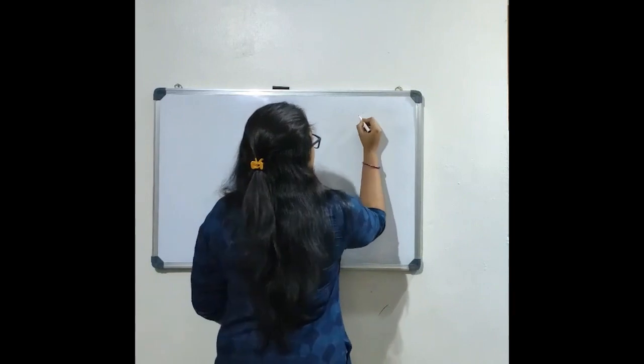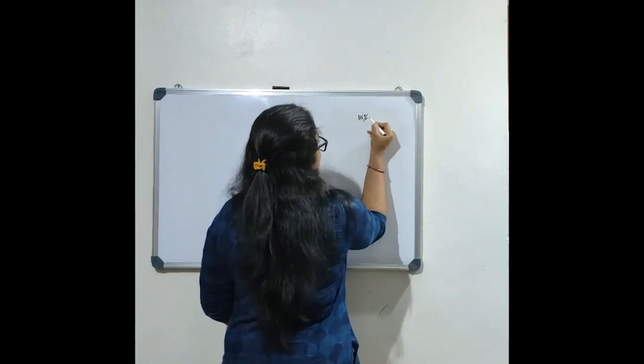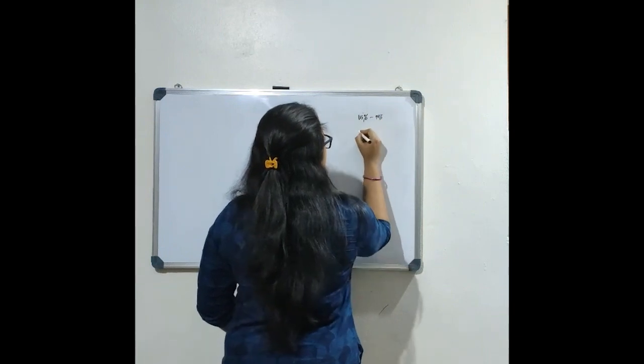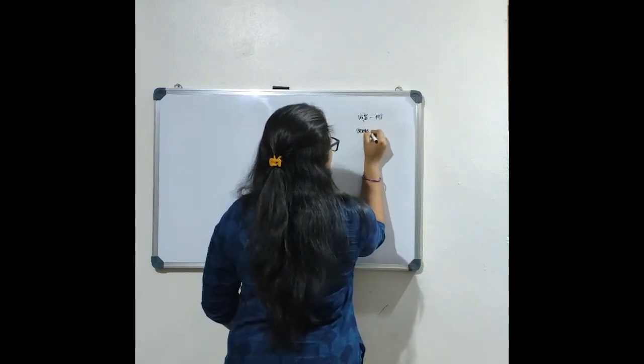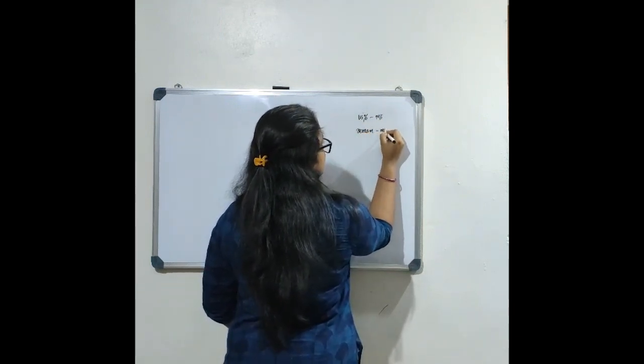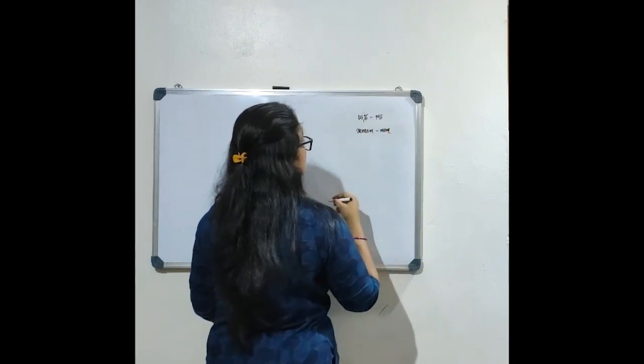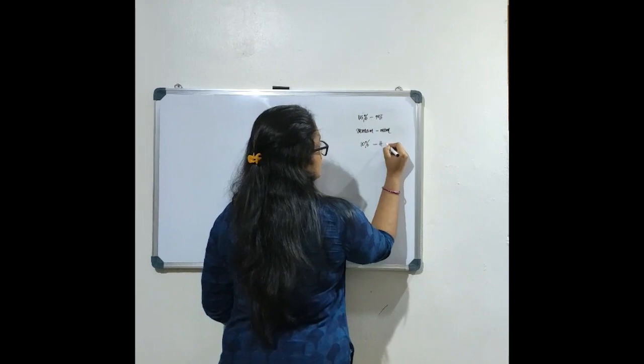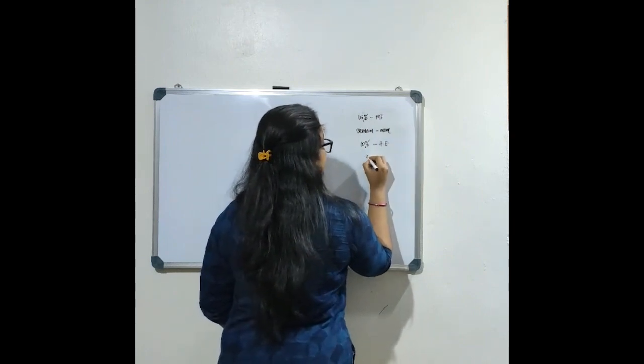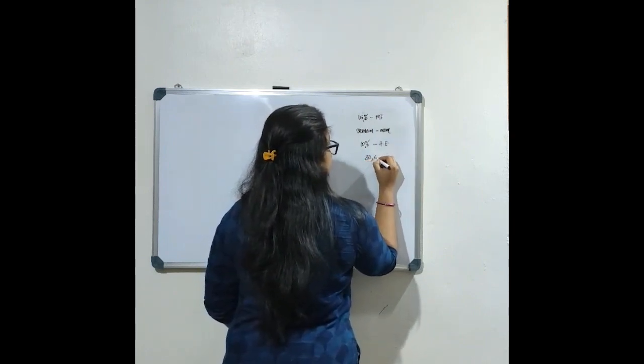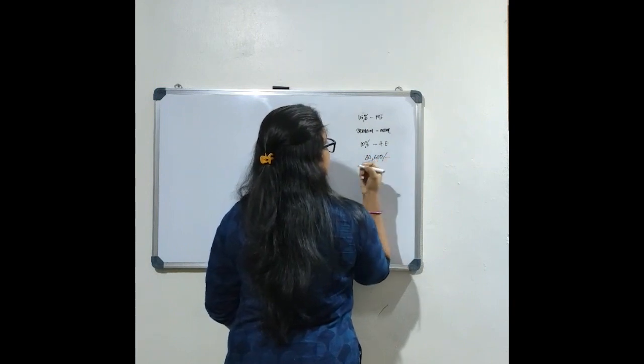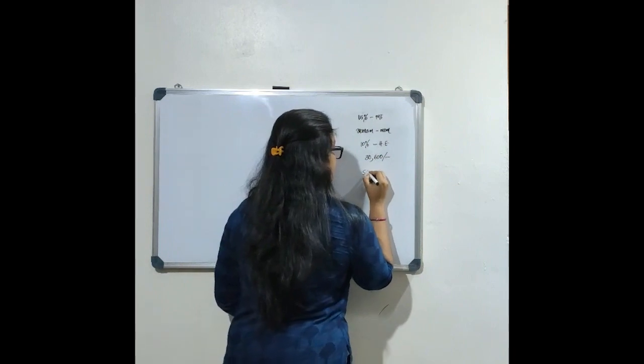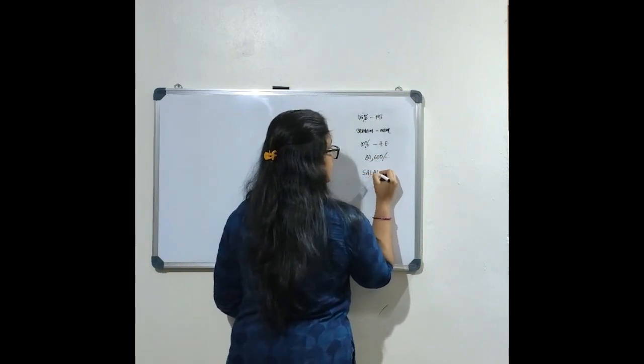A man invested 15% of his monthly salary in mutual fund. The remaining amount was handed over to his mother, of which 10% she used for household expenses, and she has savings of 30,600. What is the actual salary of the man?